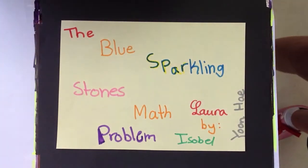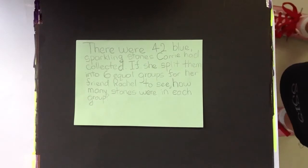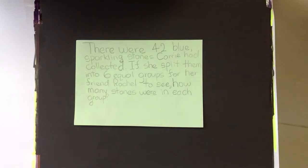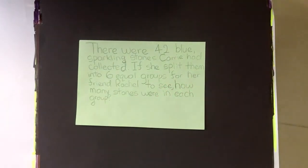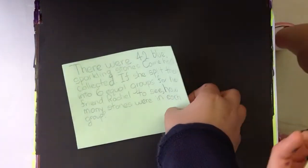The Blue Sparkling Stone Math Problem by Isabel Laura Yoonhae. Our problem is there were 42 blue sparkling stones Carrie had collected. If she split them into six equal groups for her friend Rachel to see how many stones were in each group, so now we are going to show you how to solve this problem.